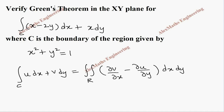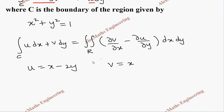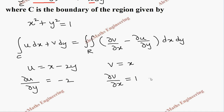From the question, we can get u and v. Let's write them separately. So u equals x minus 2y and v equals x. From this, ∂u/∂y will be minus 2 and ∂v/∂x will be 1.